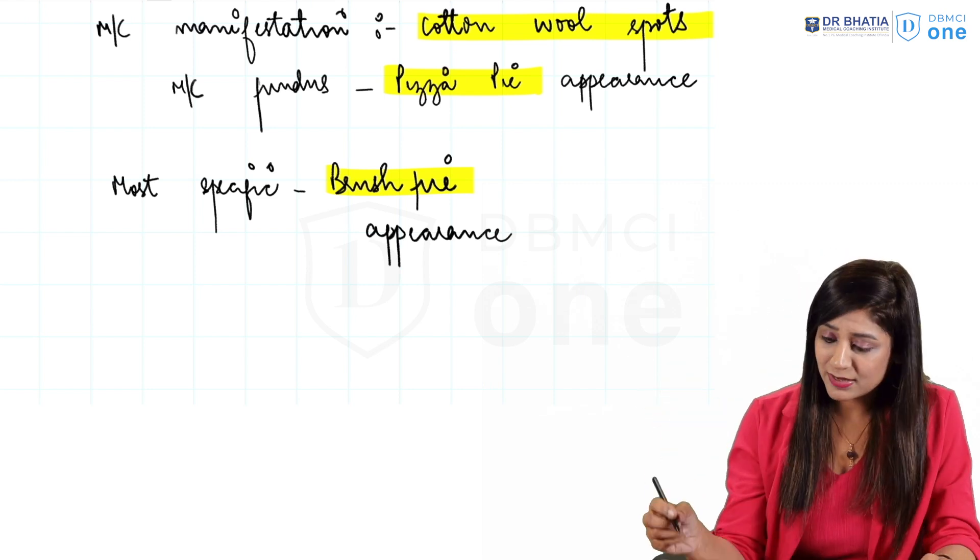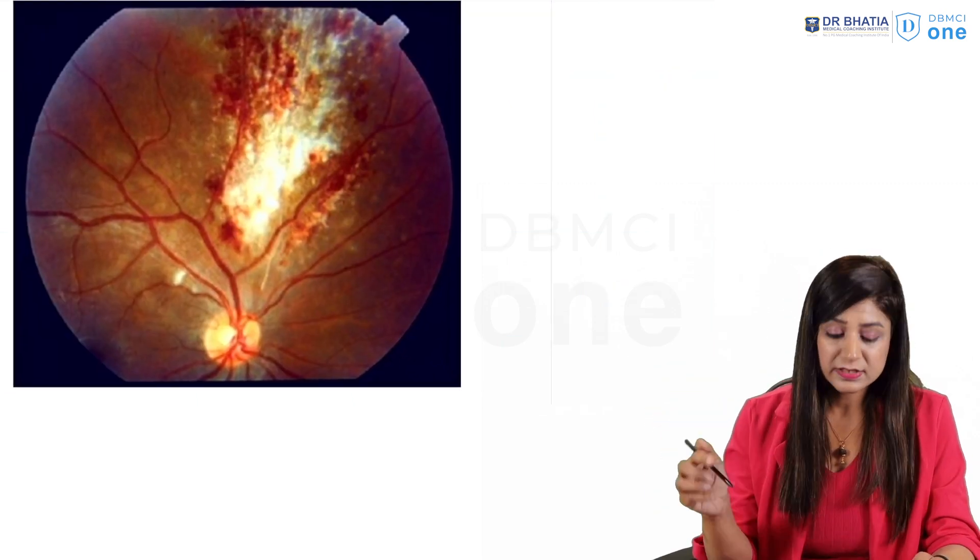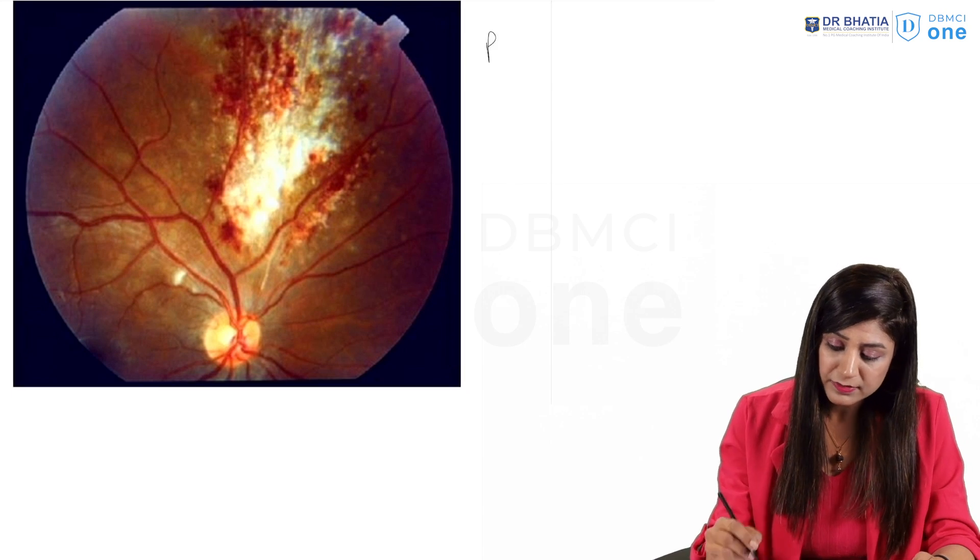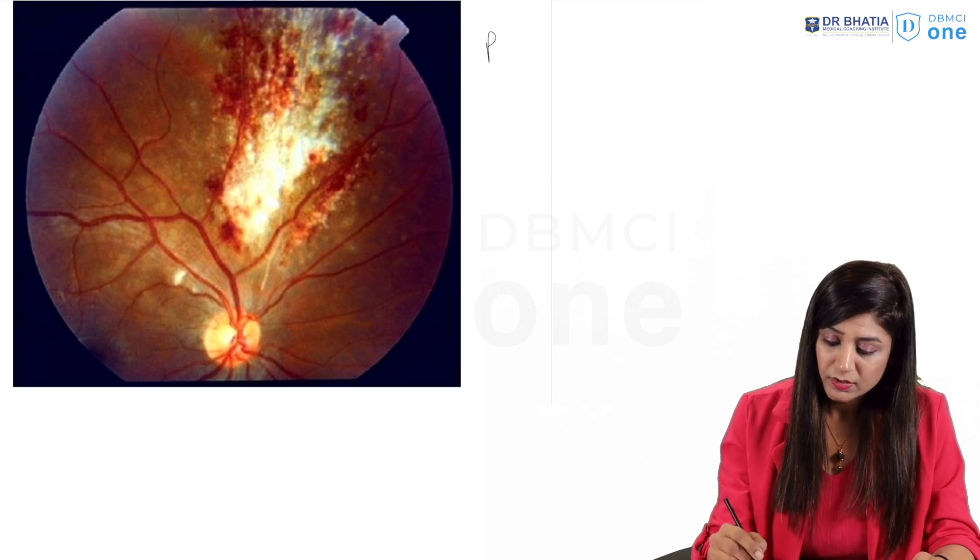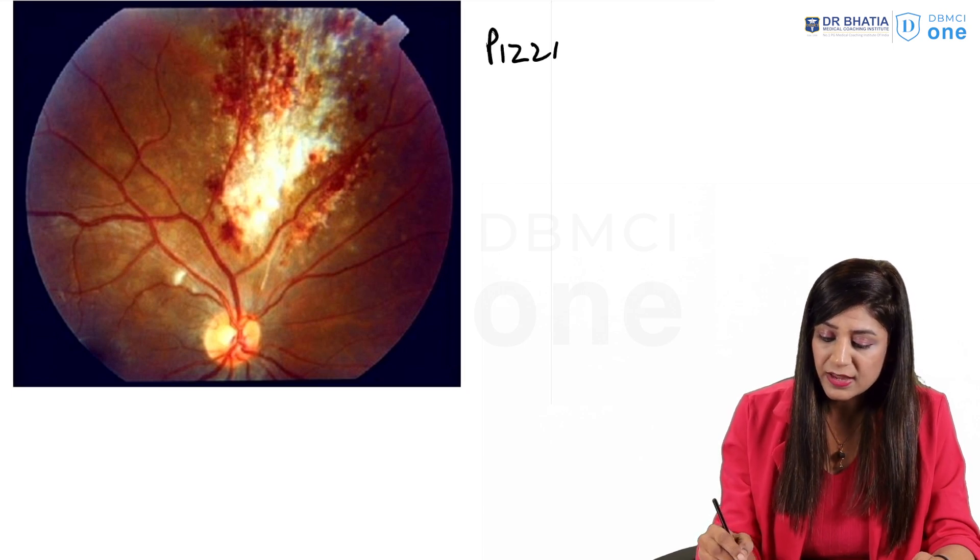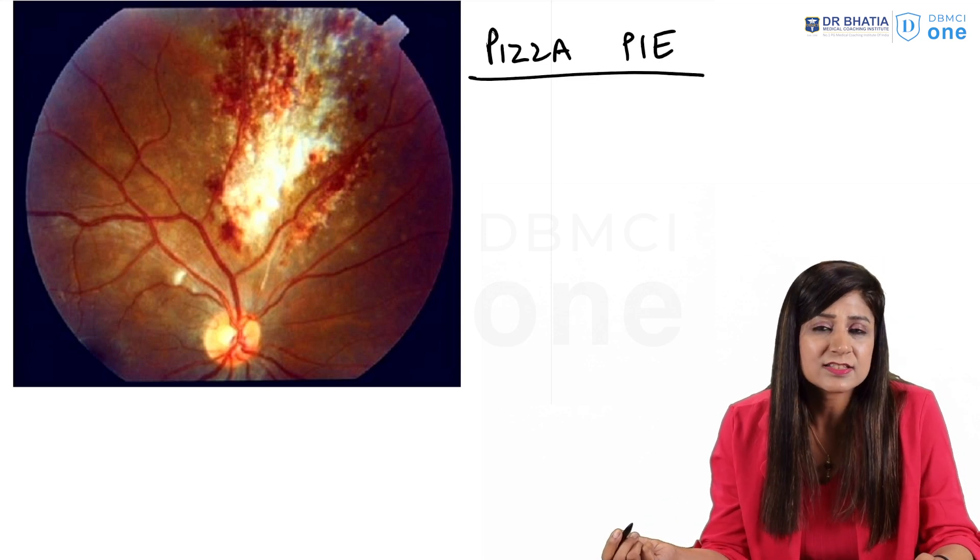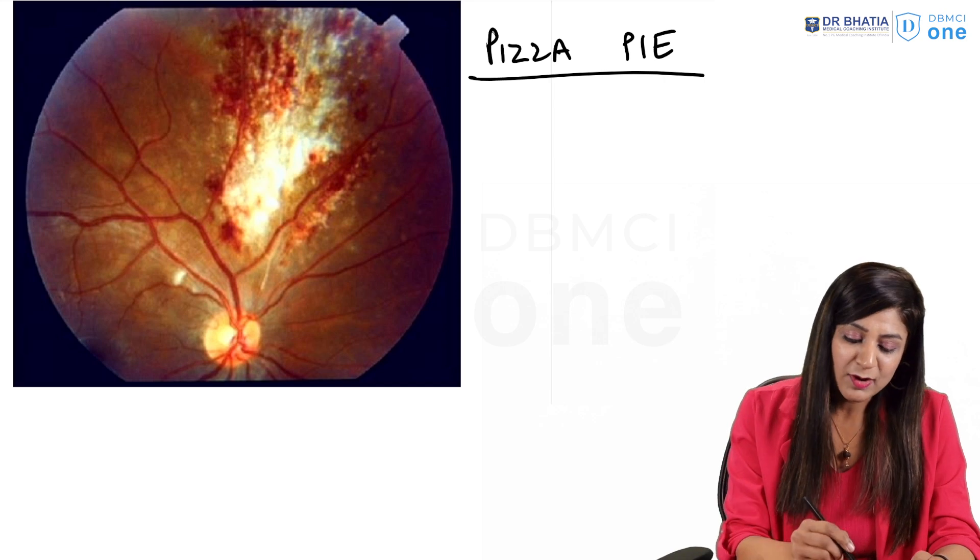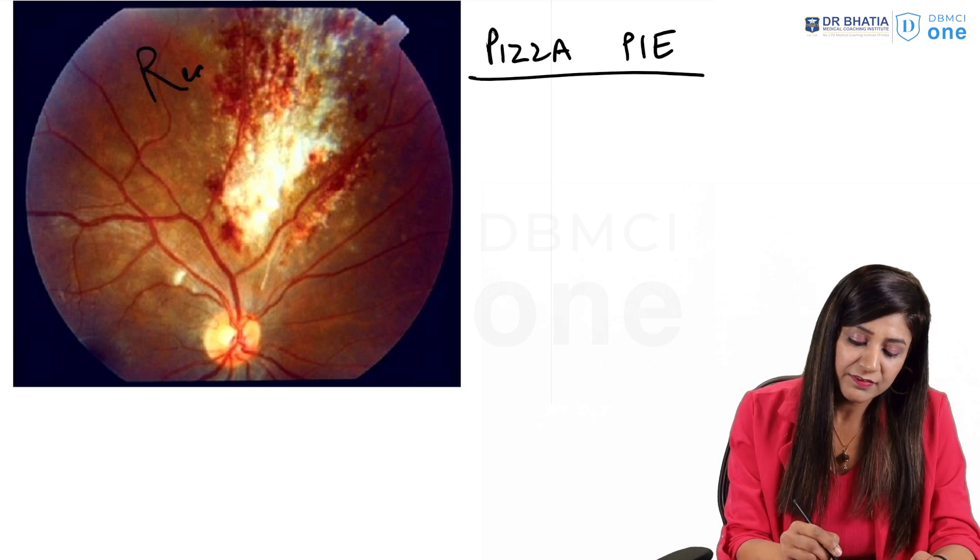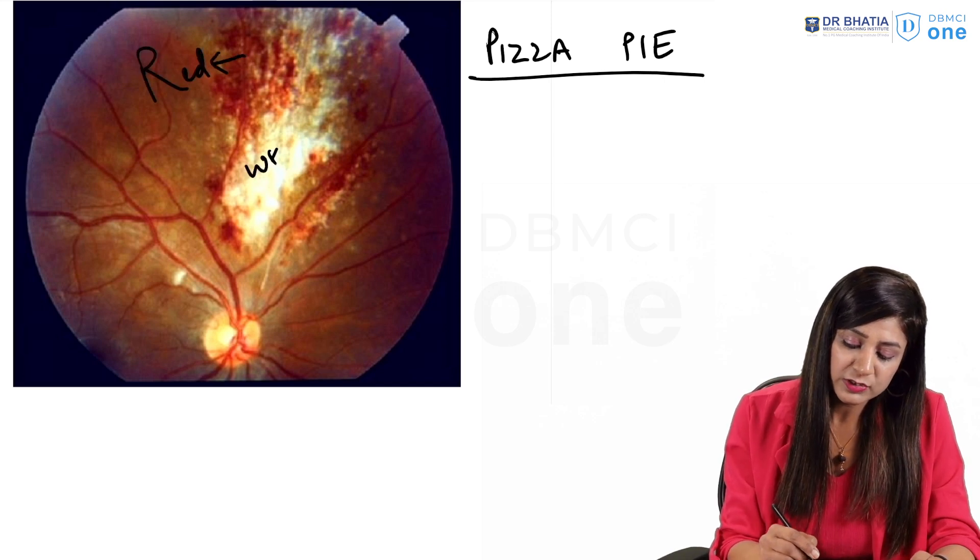Looking at the images, this is the beautiful pizza pie appearance that you get in the CMV retinitis. Now why is it called as a pizza? Because you can see we have this red area and we also have the white area. So red is the ketchup and white is the pizza.